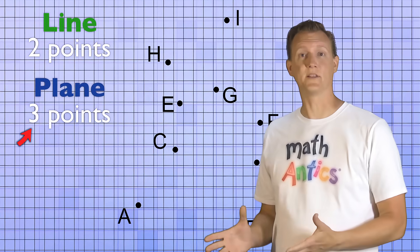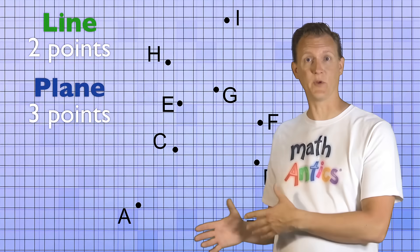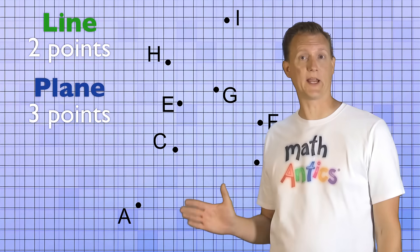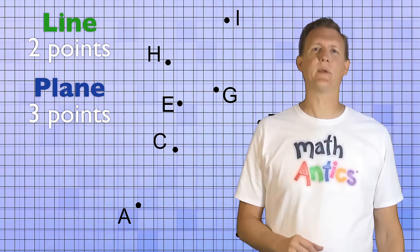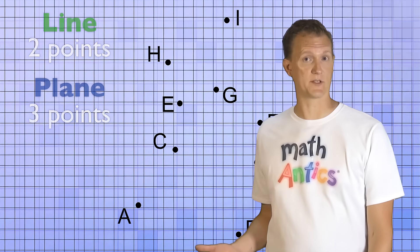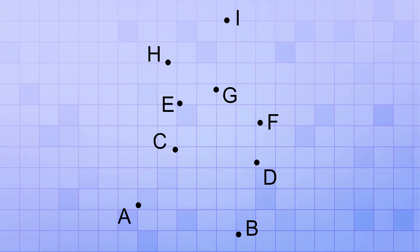So three points is all it takes to define a plane. And in the space we've been looking at, we already have plane ABC. So let's try making some other planes with the rest of the points. We can choose any three points that we want to. Let's join D, E, and F. Now we can see the triangle they form. And if we extend that flat triangle, we can see the plane that it defines.